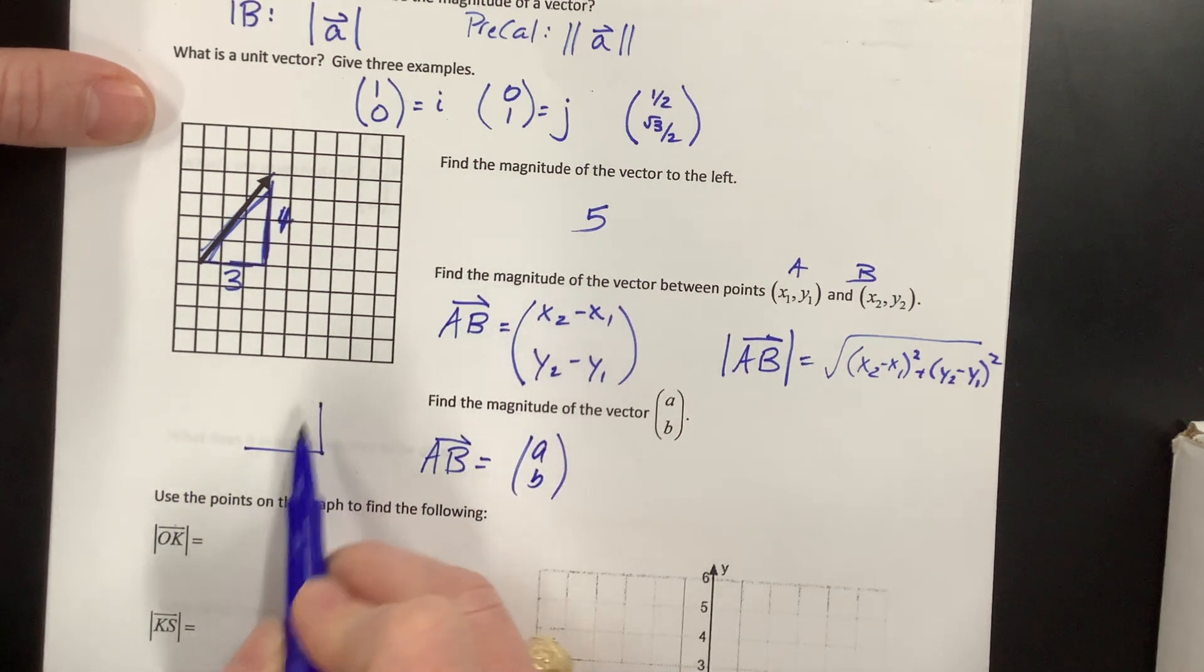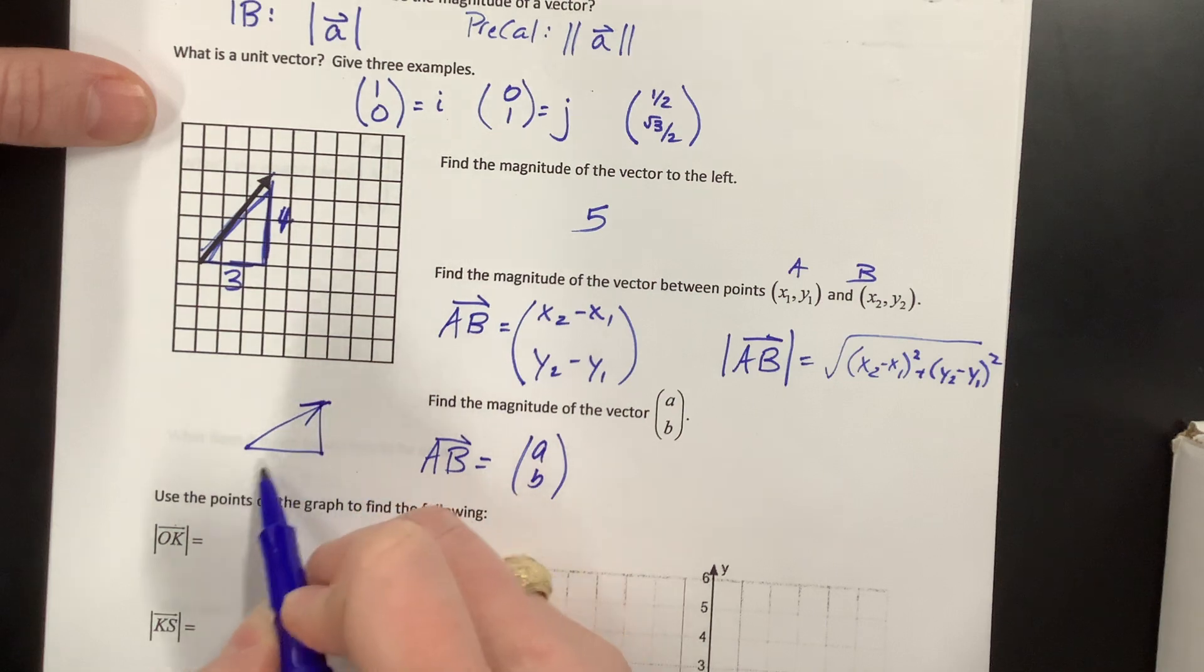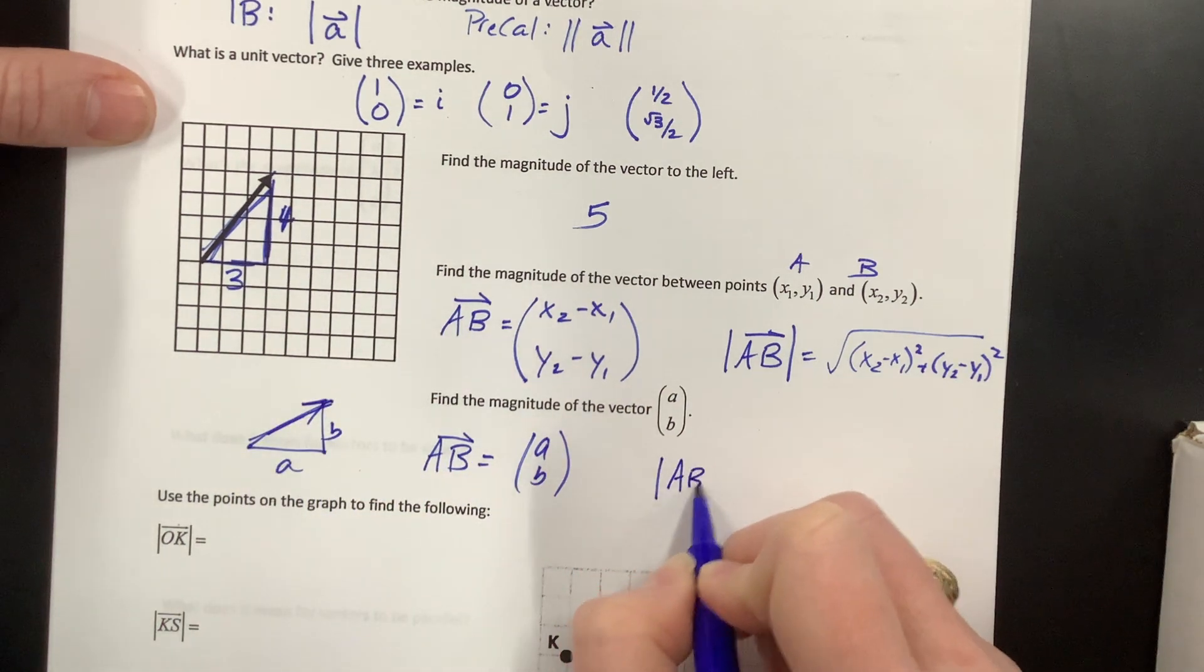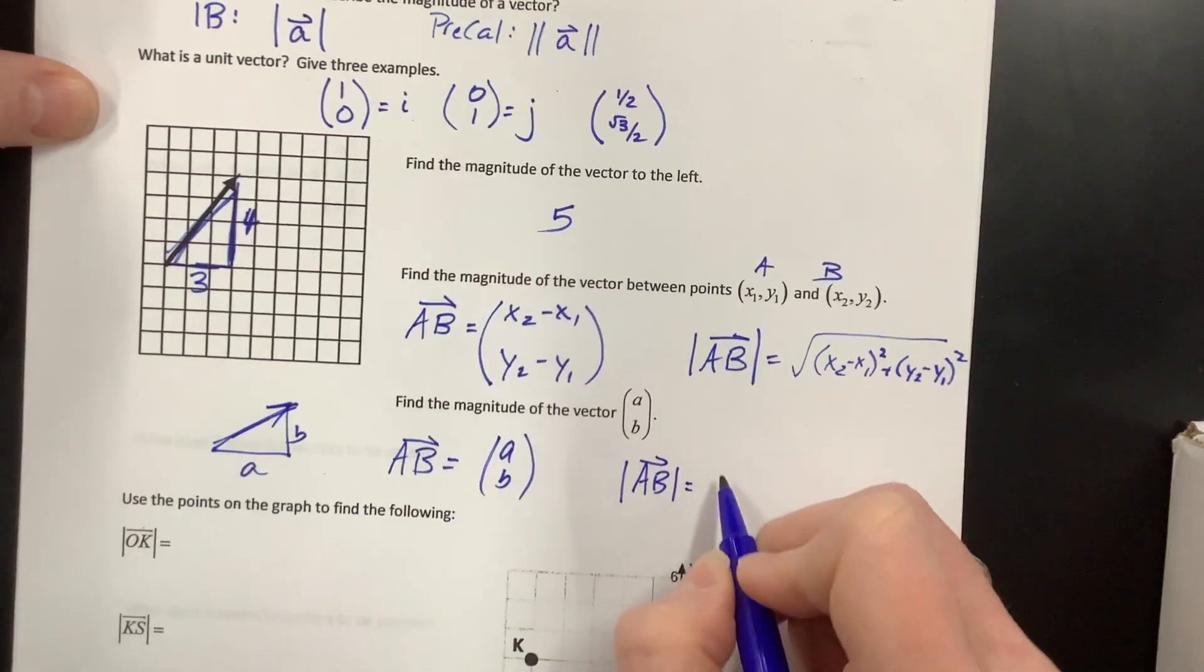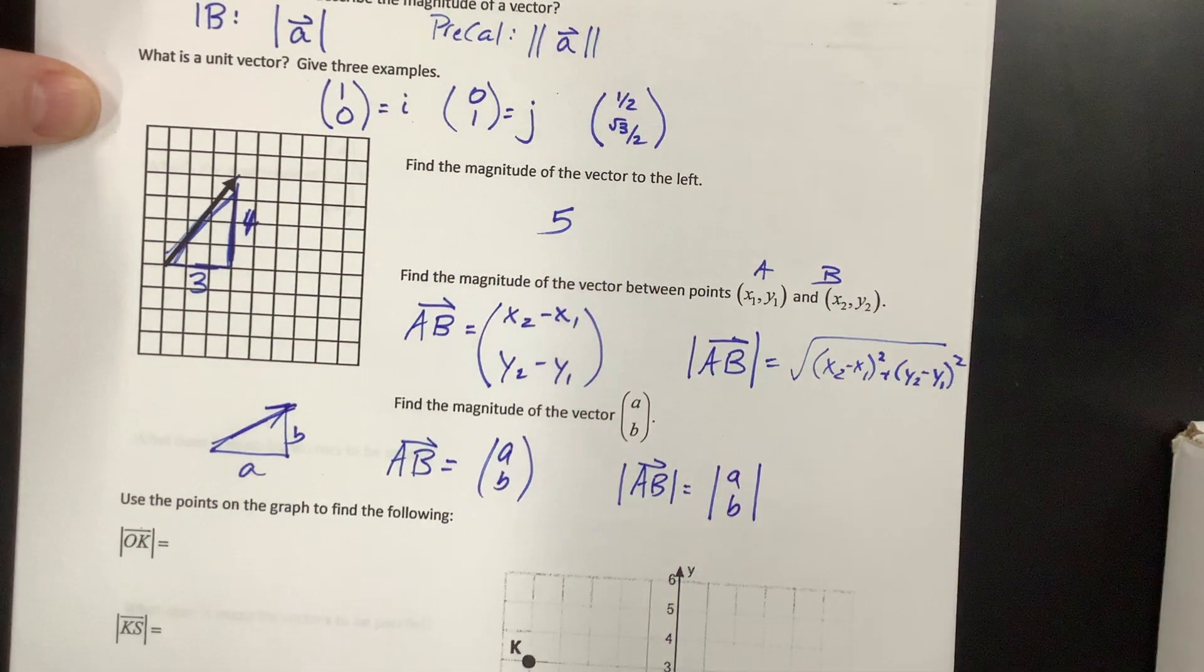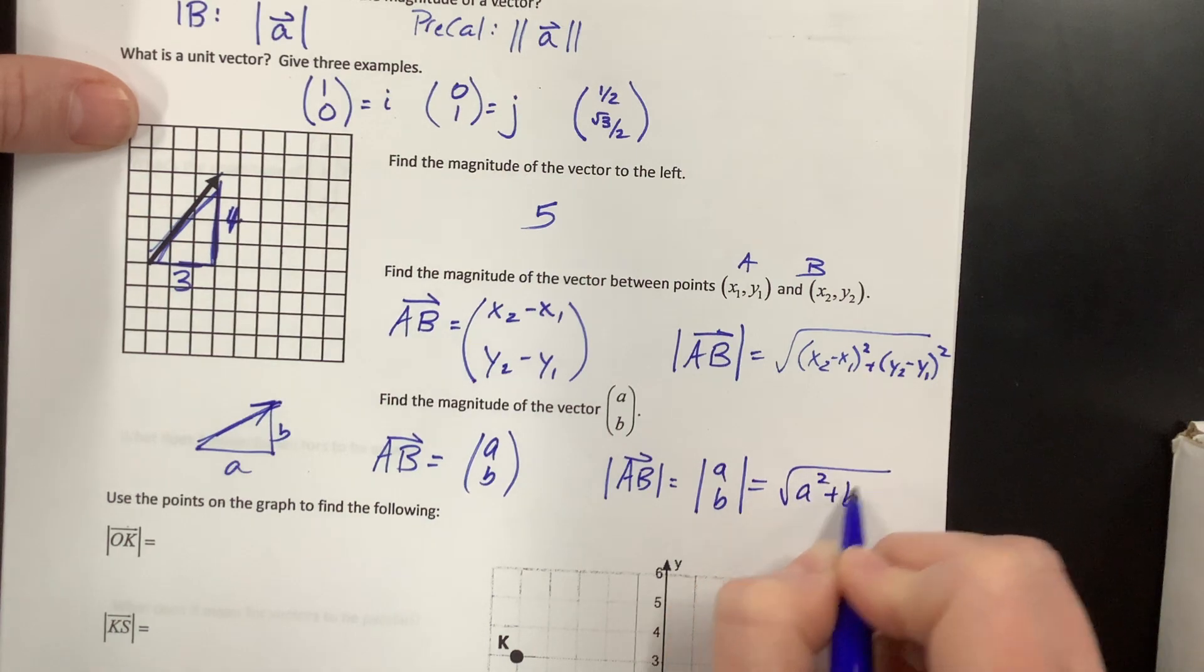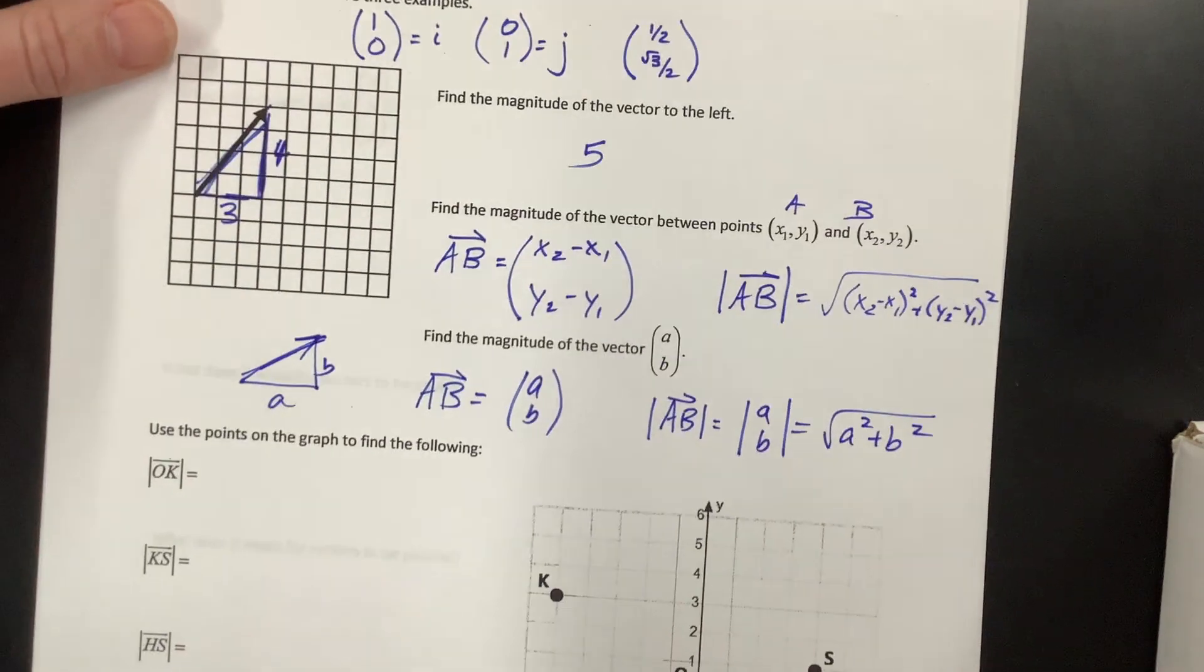So AB, then I just need to find this magnitude, so the magnitude of vector AB, or sometimes we might say the magnitude of AB like this, we might use that notation, that's going to be equal to the square root of A squared plus B squared.